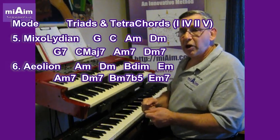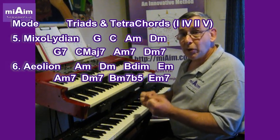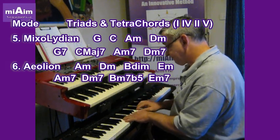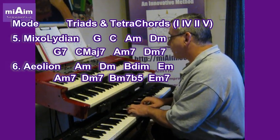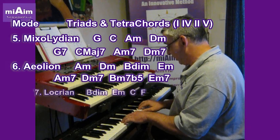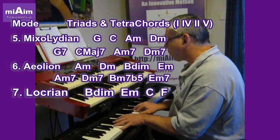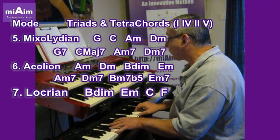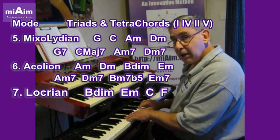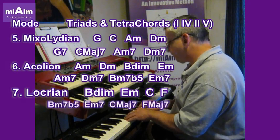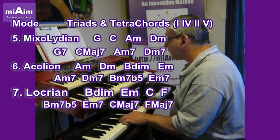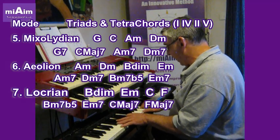The seventh is the Locrian. It's known as an angelic sound — it always leaves people wanting more, as it's not resolved. It'll start in this case on B. So the triads will be B diminished, E minor, C, and F. The tetrachords will be a B minor seventh flat five, an E minor seventh, C major seventh, and an F major seventh.